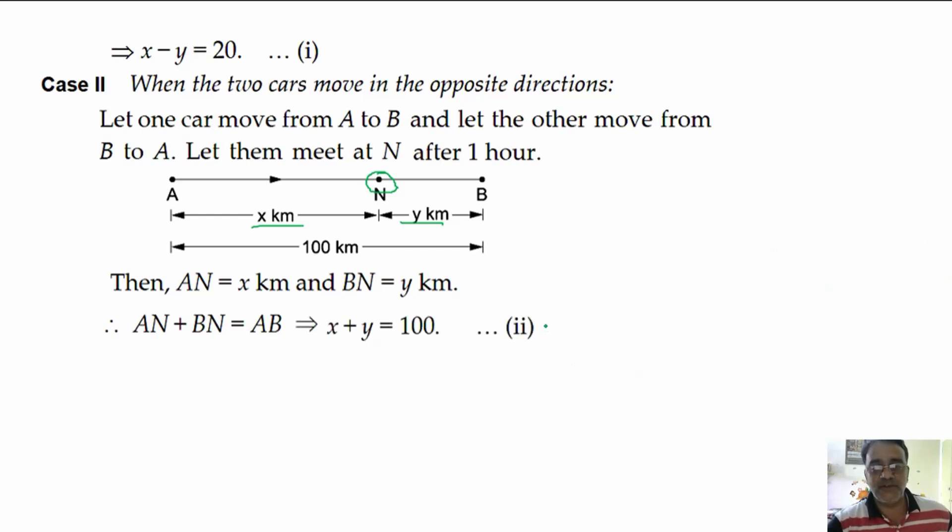Now see first equation and second equation. Both variables have same coefficients but y has different opposite sign. So we will go for addition. If you add these two, y will be cancelled and you will get 2x equals 120. Adding 1 and 2 we get 2x equals 120. So what is the value of x? 60.